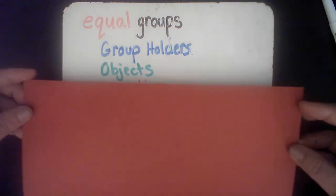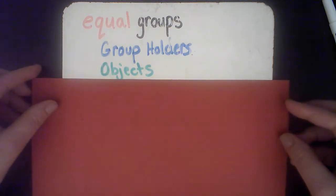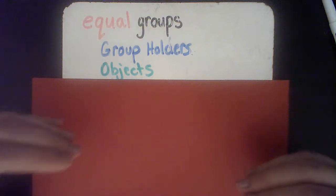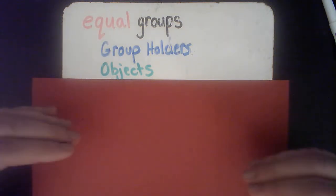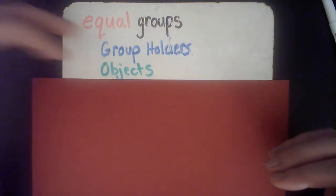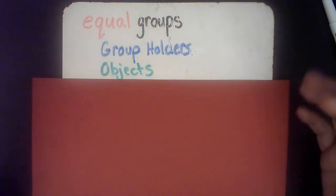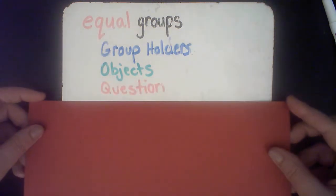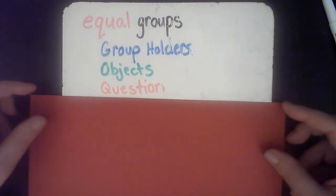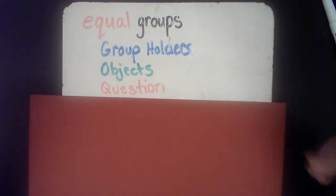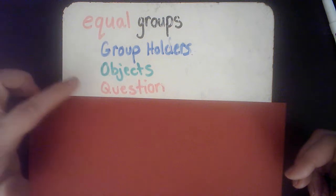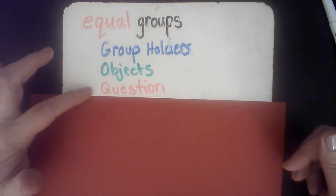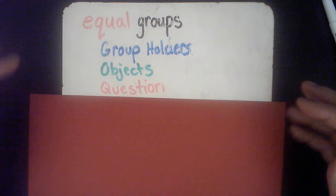The next thing we need to think about is the objects — what are going to be the things in my story problem? What's going to be in the boxes or in the bags or whatever my group holder is? And then the last part is we need to end our story problem with a question, and that comes at the very end.